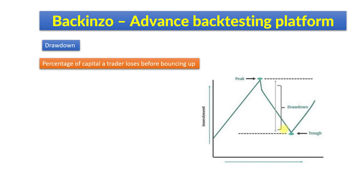Drawdown in trading is very common — every trader goes through a drawdown phase. But the percentage of the drawdown is what's very important to understand. A 10 to 20 percent drawdown is very common, but a deeper drawdown of 40 to 50 percent can be very damaging to the account.